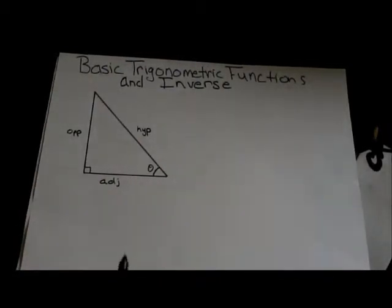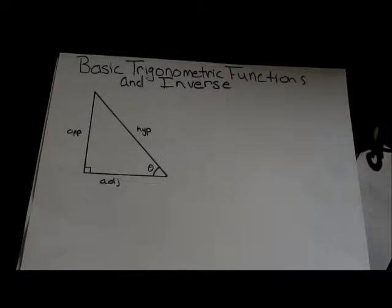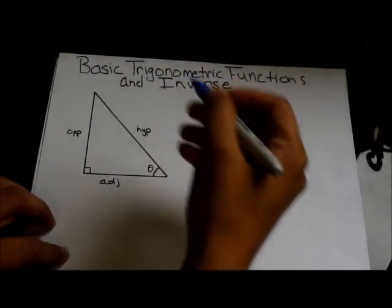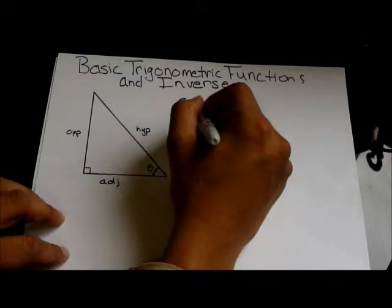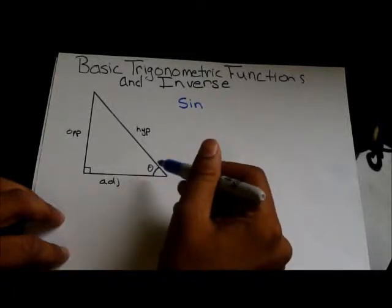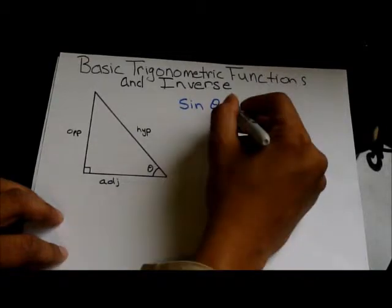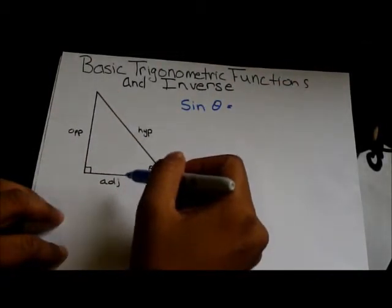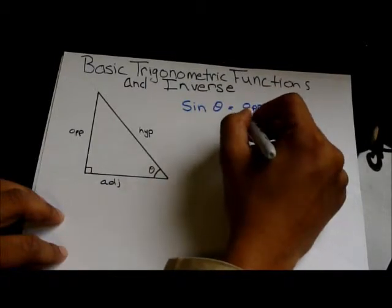So since we figured out our triangle, let's give the definitions for those basic trigonometric functions. And, it is very important that you remember these. This is a basis for all physics and biomechanics calculations. The first one, let's go with sine. We always have to incorporate the angle in question. So, sine theta is equal to opposite over the hypotenuse.